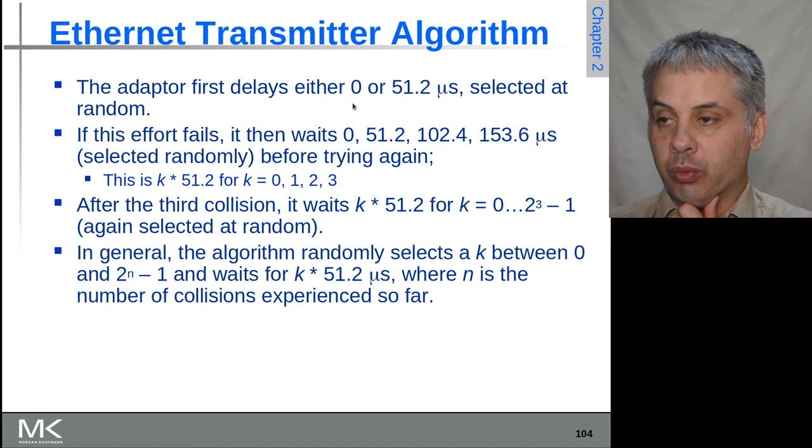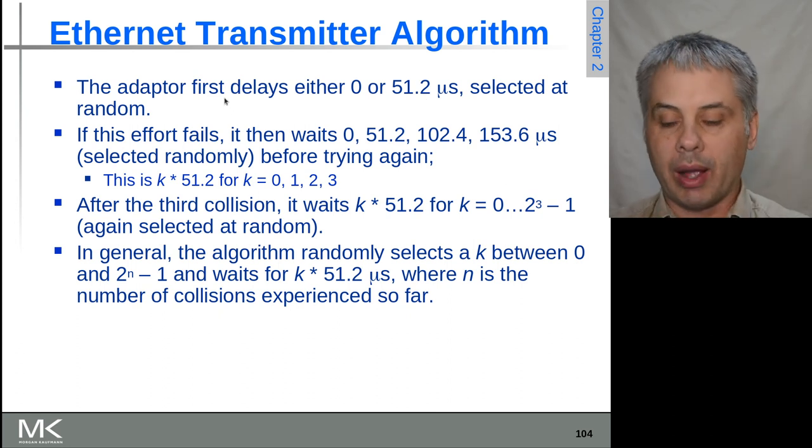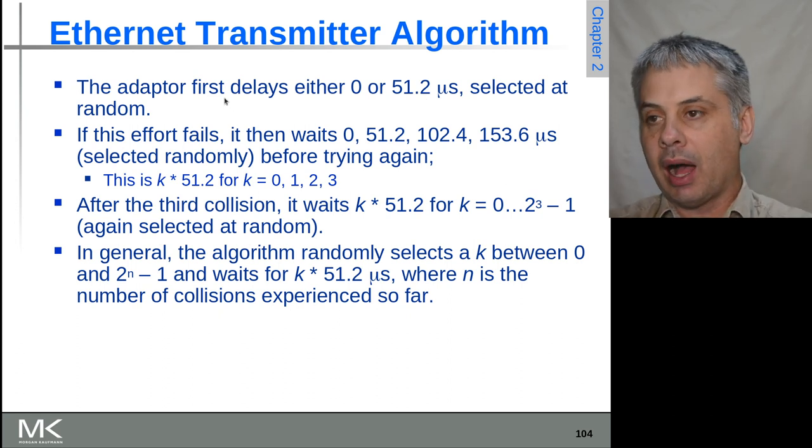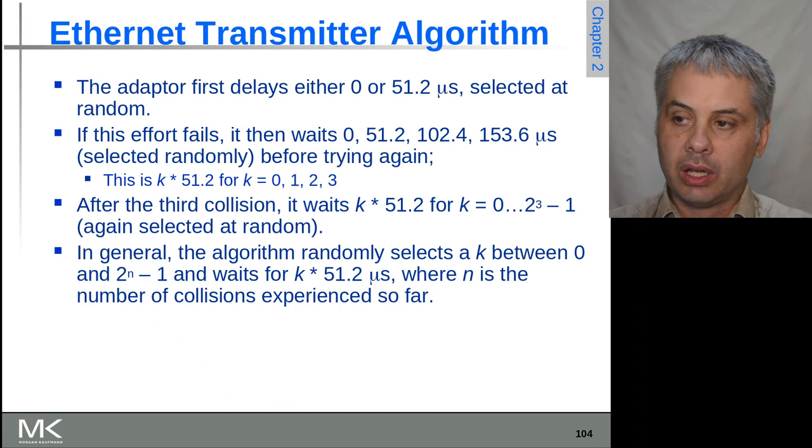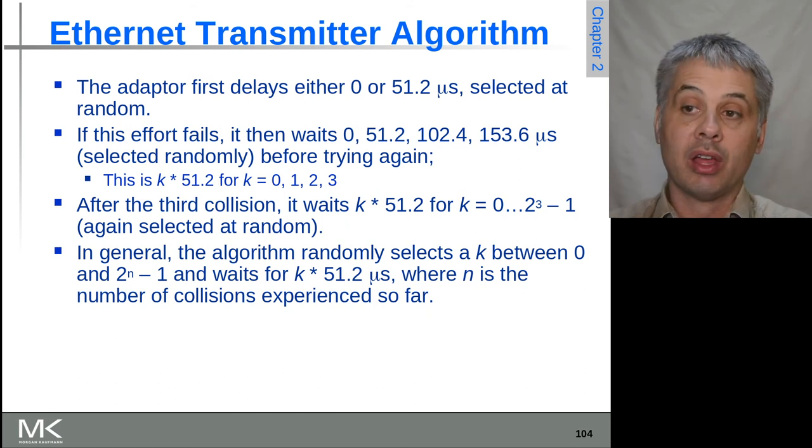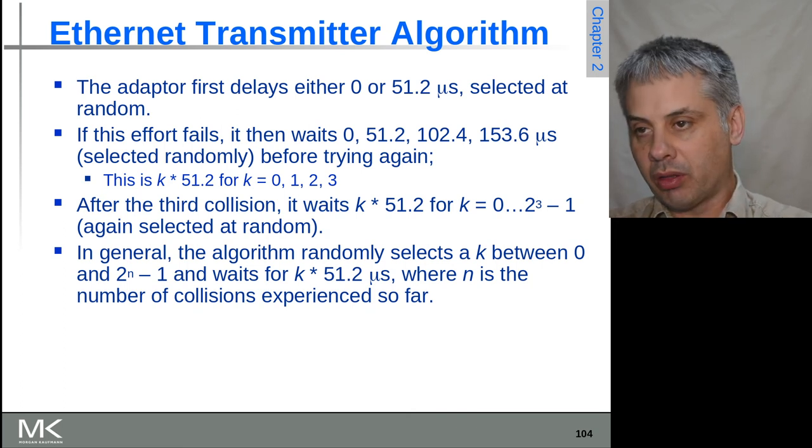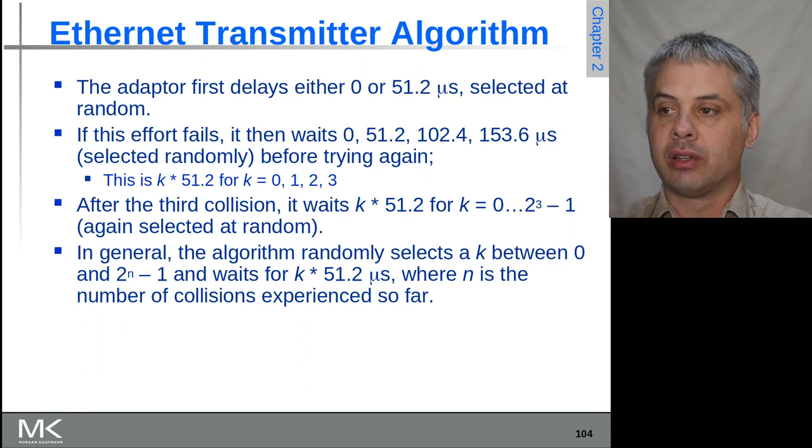Each adapter first waits either zero or 51.2 microseconds, and it chooses at random whether to do that. So in theory, half the time both of the adapters will actually choose a different time to each other, which will allow the transmission of one or the other to proceed. So that's 50% of the time it's resolved automatically. If that fails, so the other 50% of the time, it will either wait 0, 1, 2, or 3 times 51.2 microseconds, again randomly chosen, before trying again.